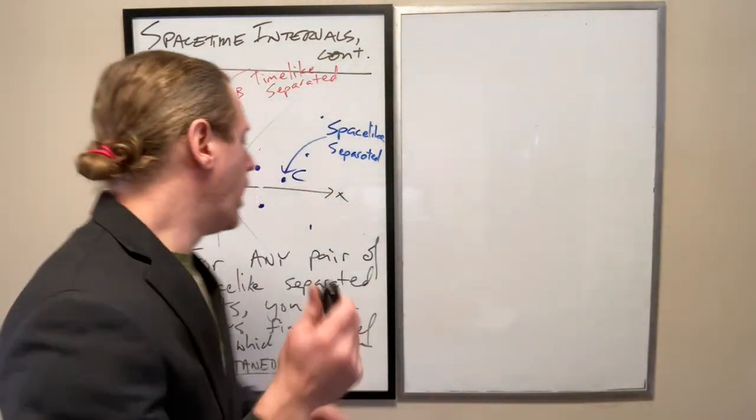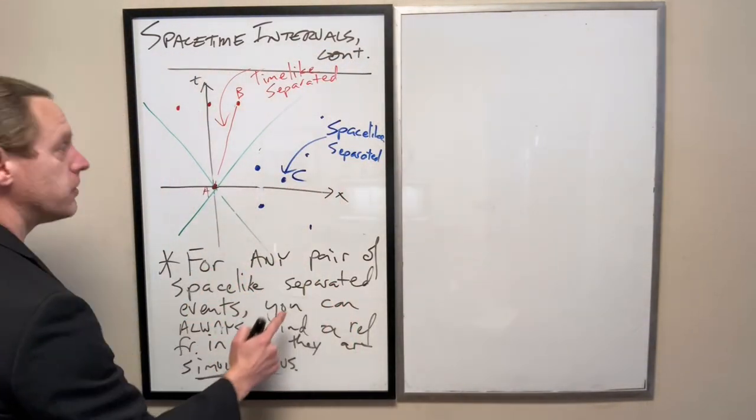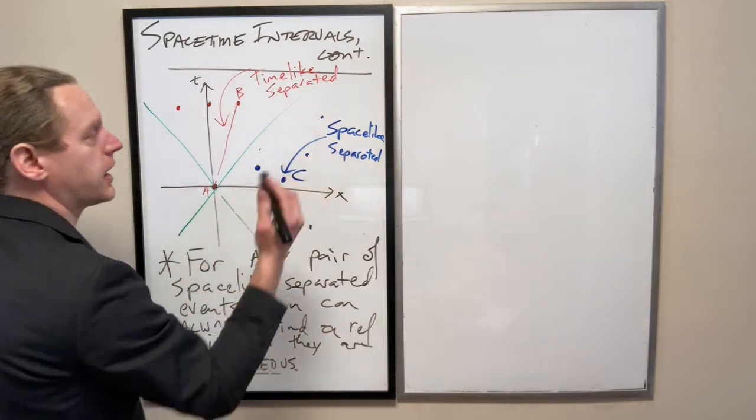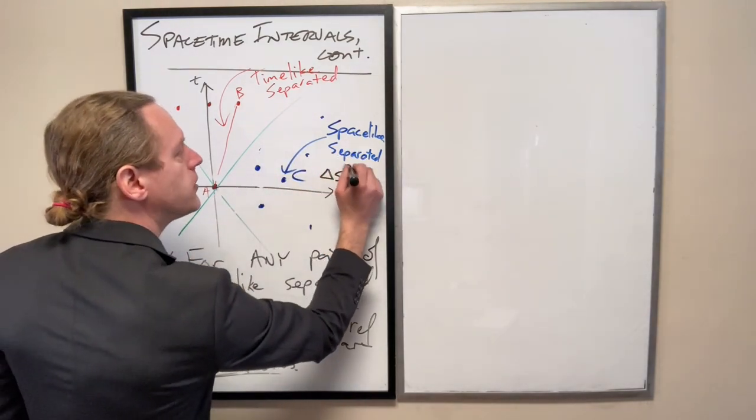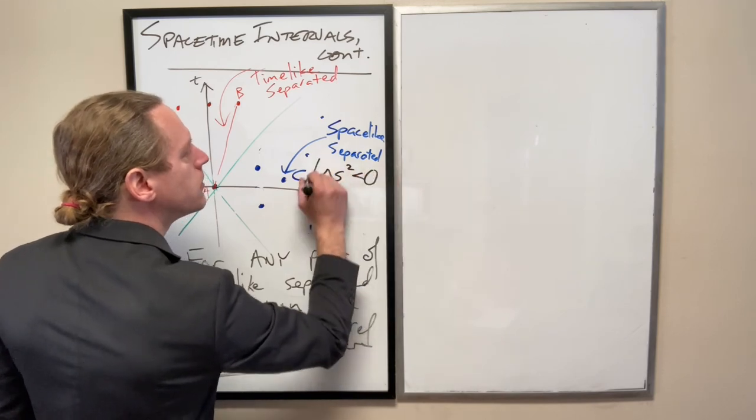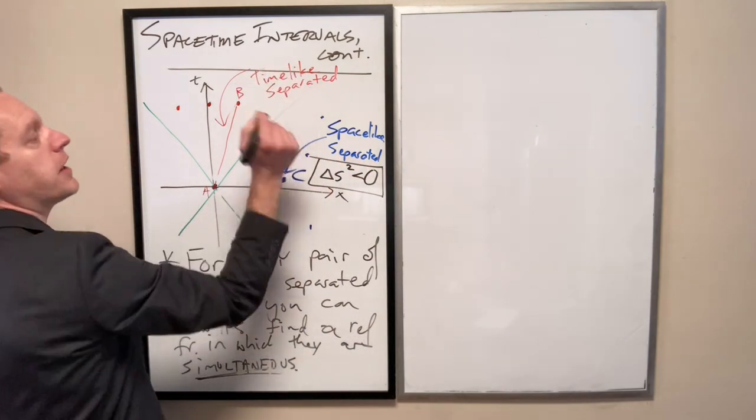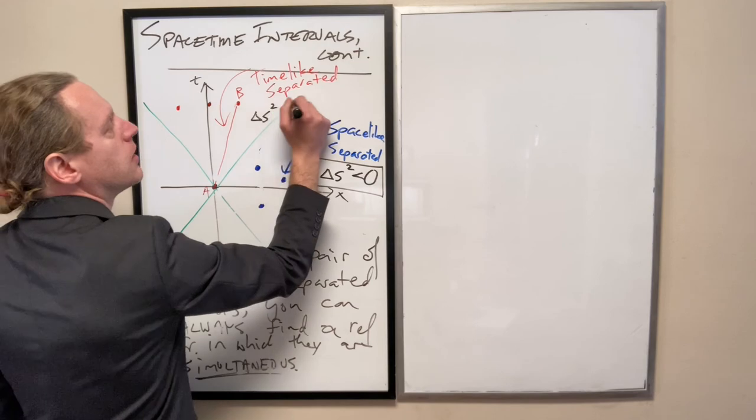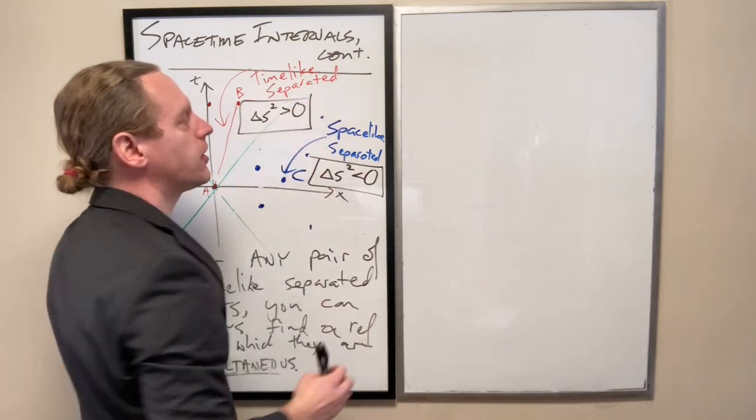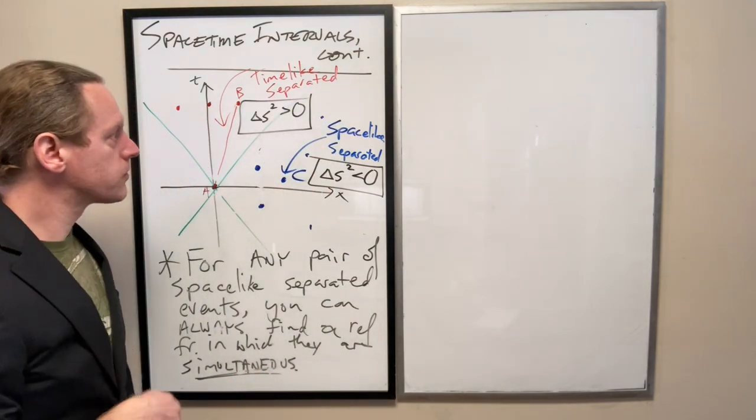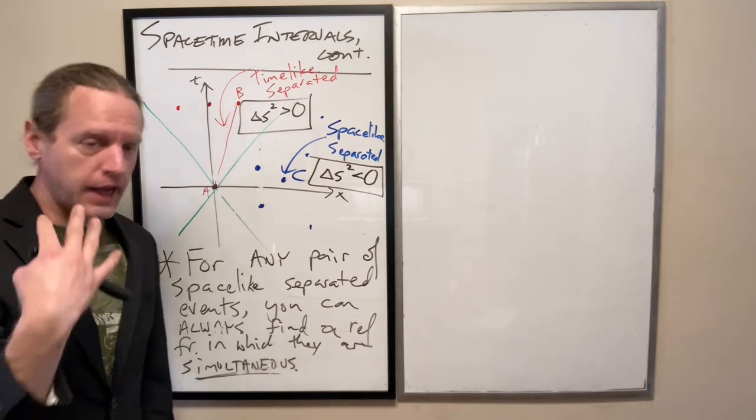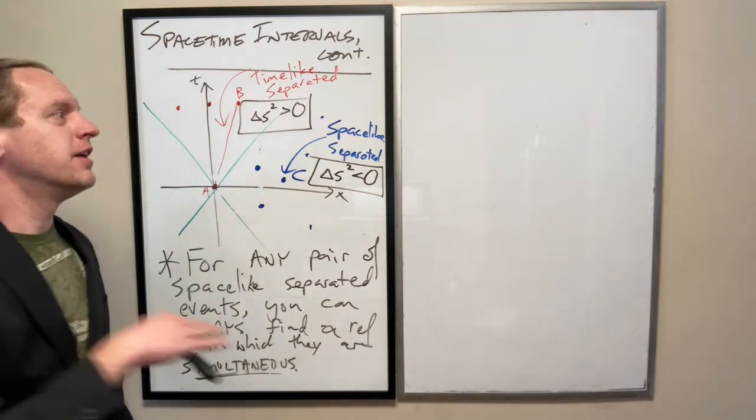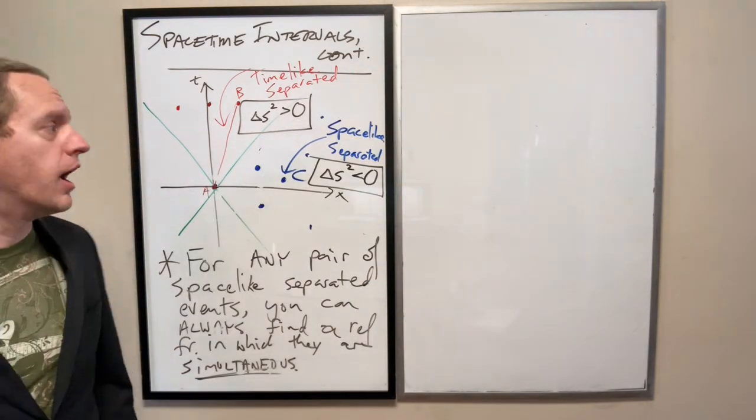And then one last thing. For space-like events, the last thing I'm going to indicate here: delta S squared is less than zero. And okay, now what the hell does that mean, you ask? That's where we're going to get to exactly the analysis here.